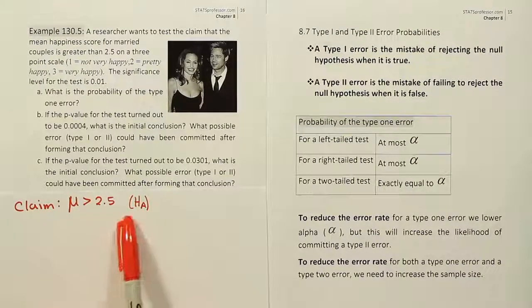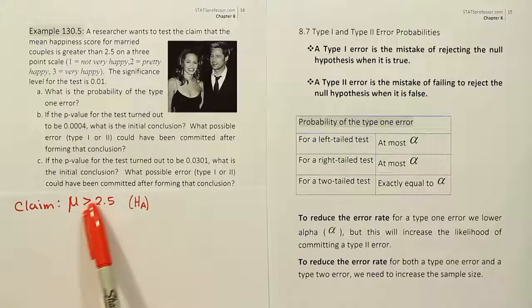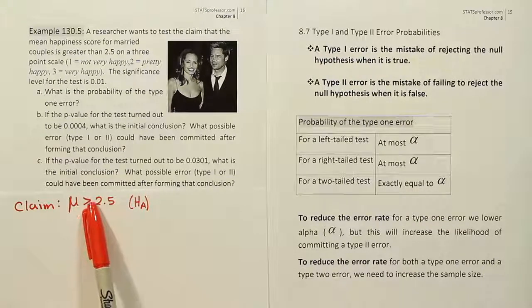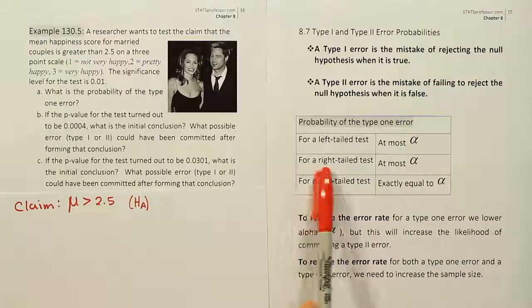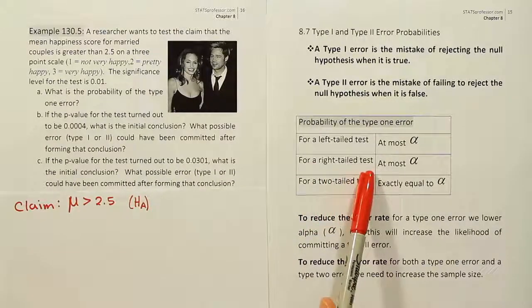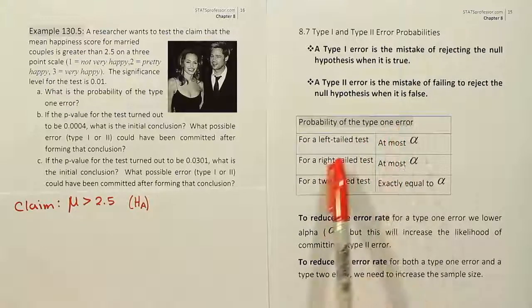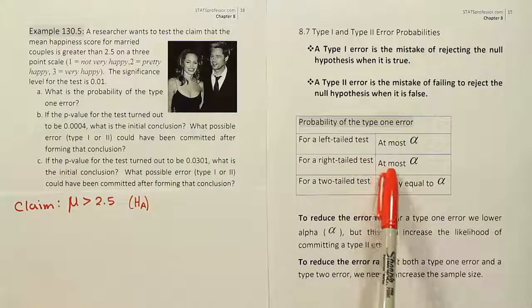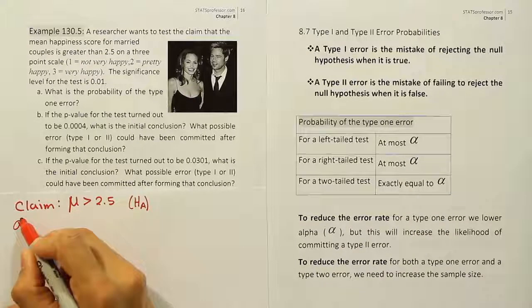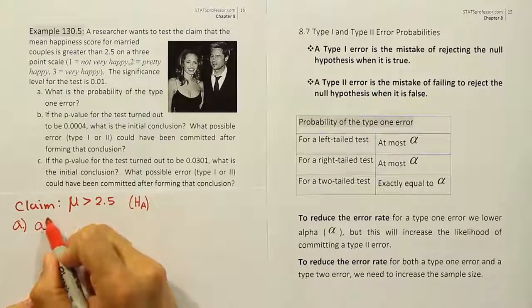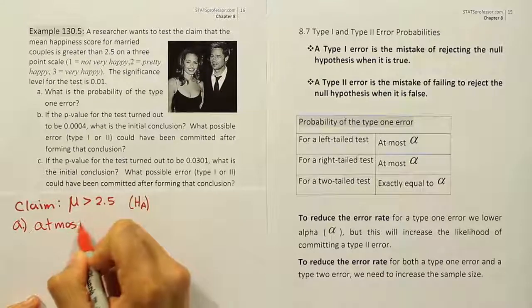So the claim isn't always HA, but in this case it is because of the greater than symbol. And because of that greater than symbol, it indicates a right-tailed test. So a right-tailed test has a simple property, which is the probability of a type 1 error for a right-tailed test is at most alpha.